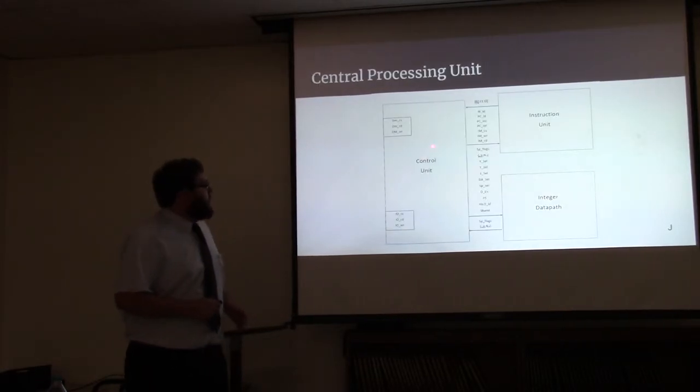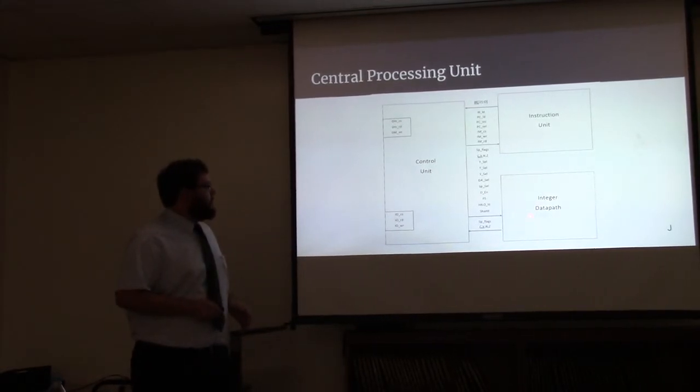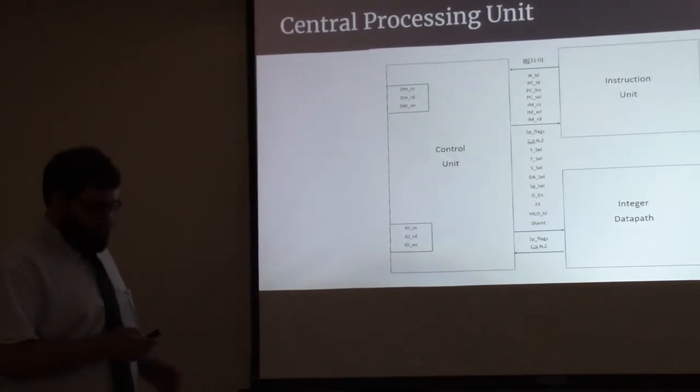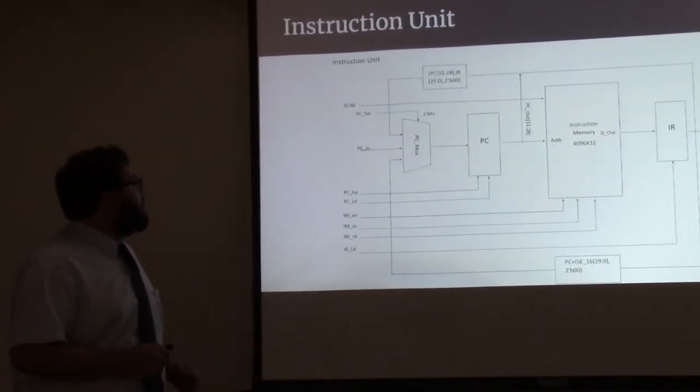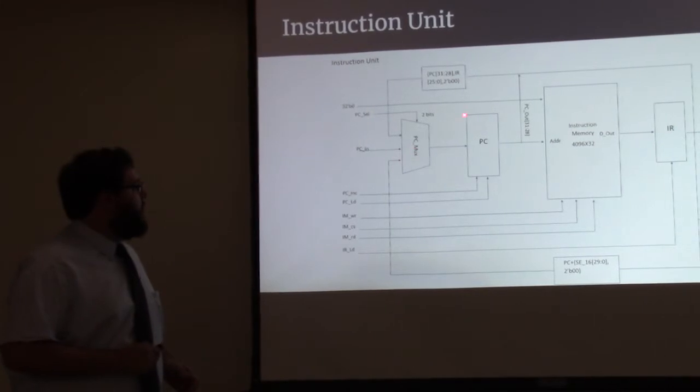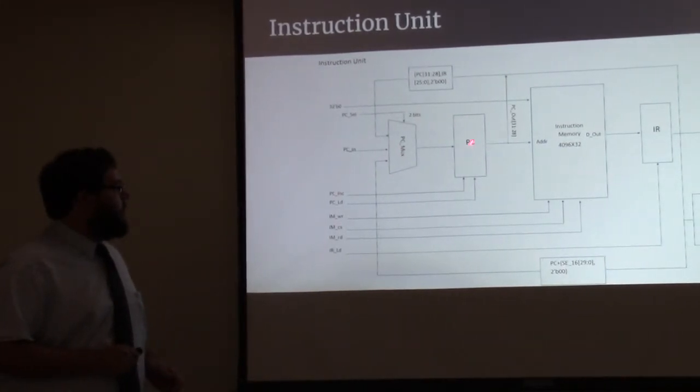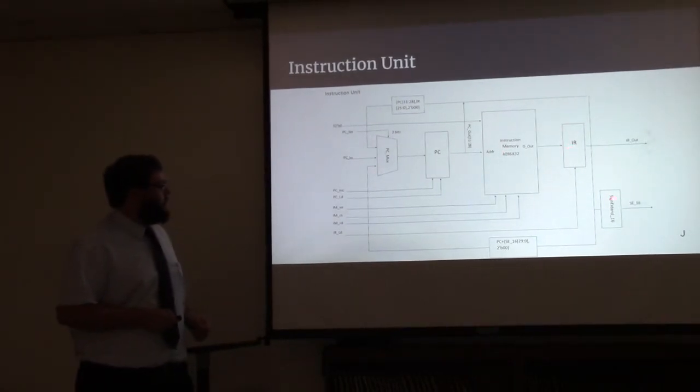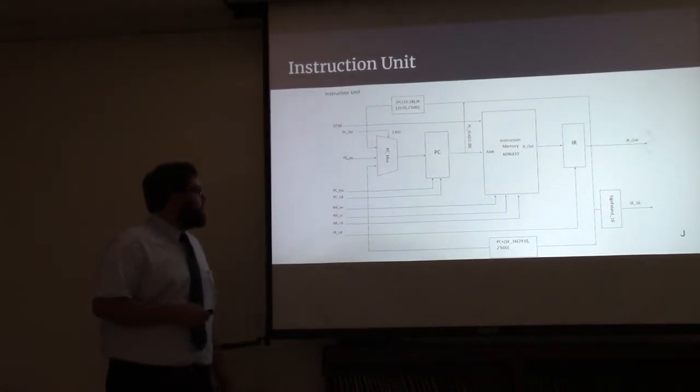The CPU has various buses that connect the instruction unit and the integer data path with the various signals required to drive each of the parts. In the instruction unit, we have a PC mux, a PC counter, a program counter, an instruction memory, and an IR register with a sign extended out for immediate instructions.